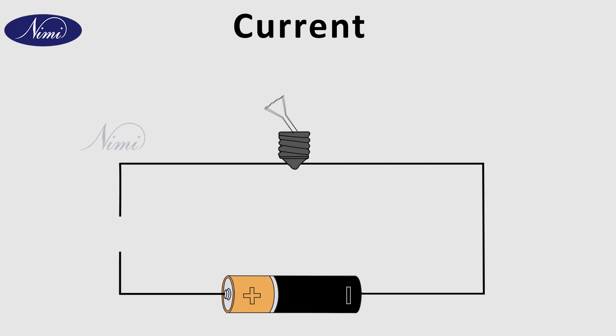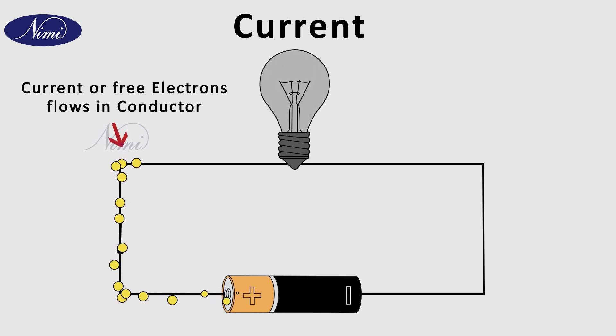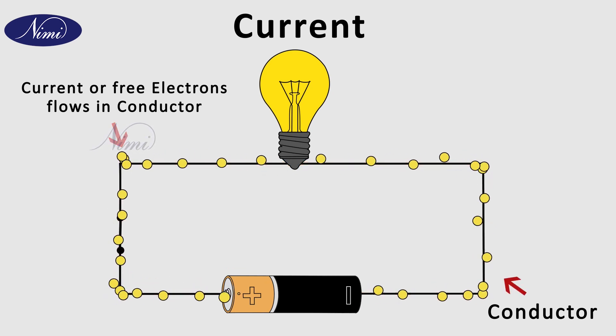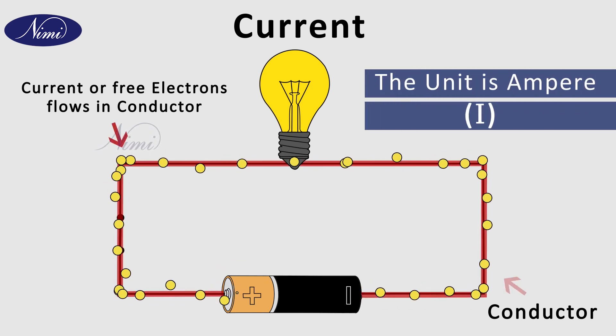Then what is current? Current is flow of free electrons in a conductor. The unit of current is ampere and it is denoted by a letter I.